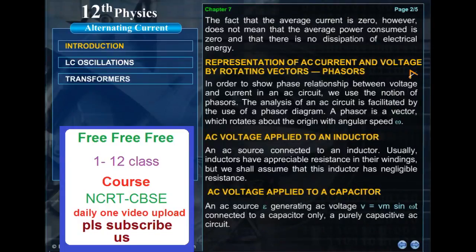In order to show phase relationship between voltage and current in an AC circuit, we use the notion of phasors. The analysis of an AC circuit is facilitated by the use of a phasor diagram. A phasor is a vector which rotates about the origin with angular speed omega.